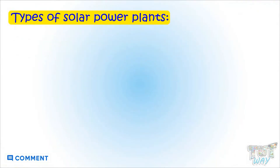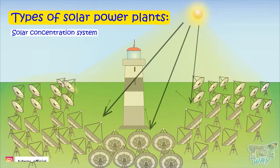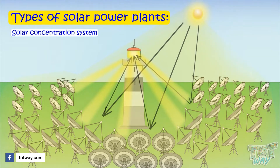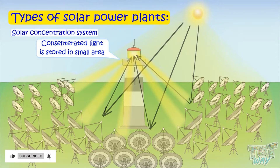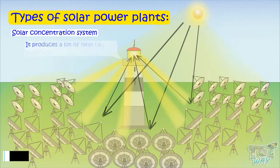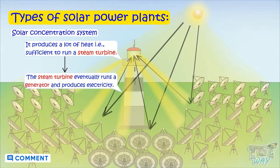There is one more type of solar power plant known as solar concentration systems. These systems use mirrors or lenses that concentrate a large amount of light falling on a large area onto a small area. This concentrated light produces a lot of heat sufficient to run a steam turbine that eventually runs a generator and produces electricity.